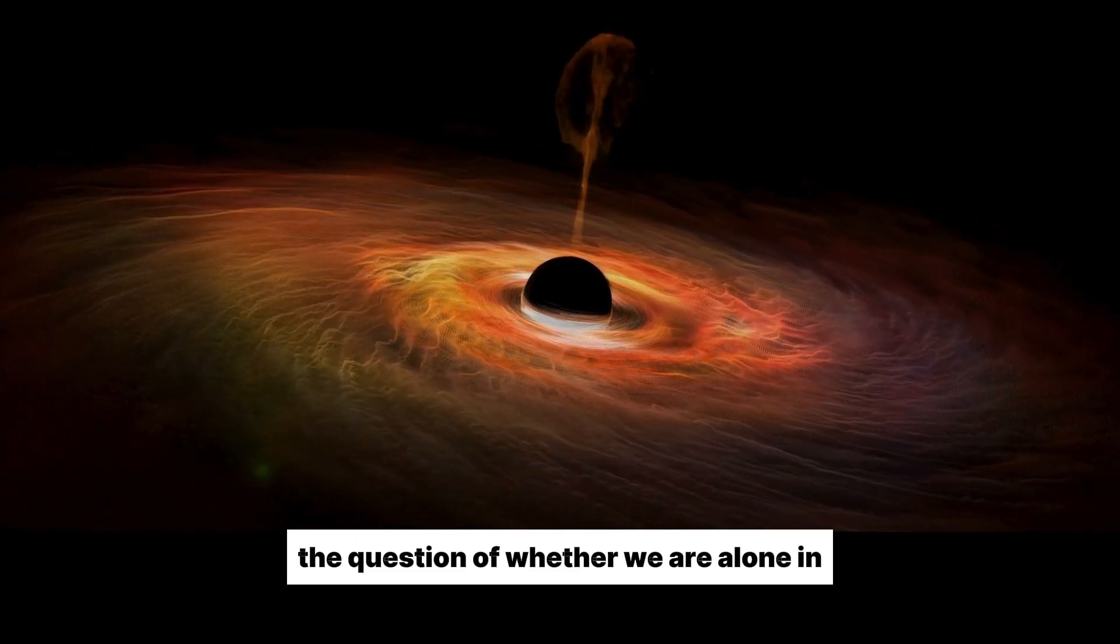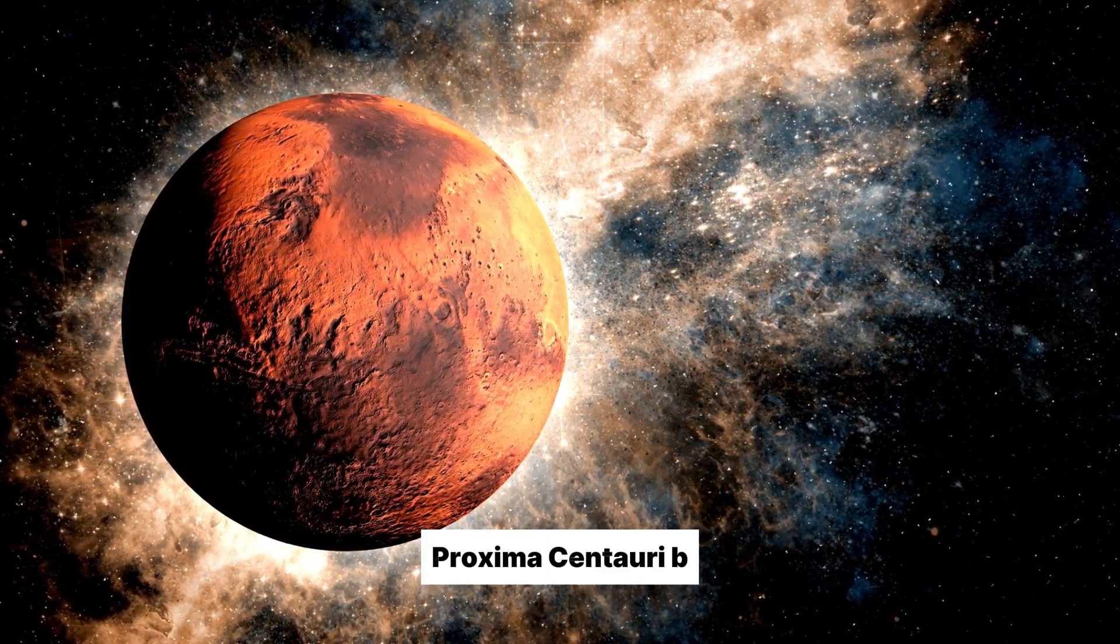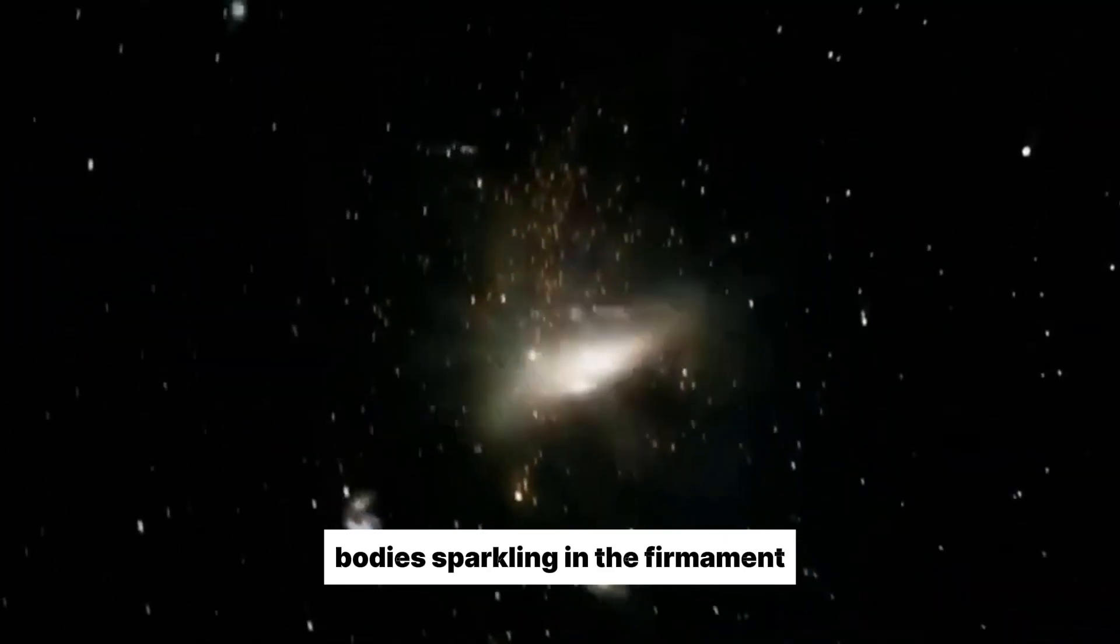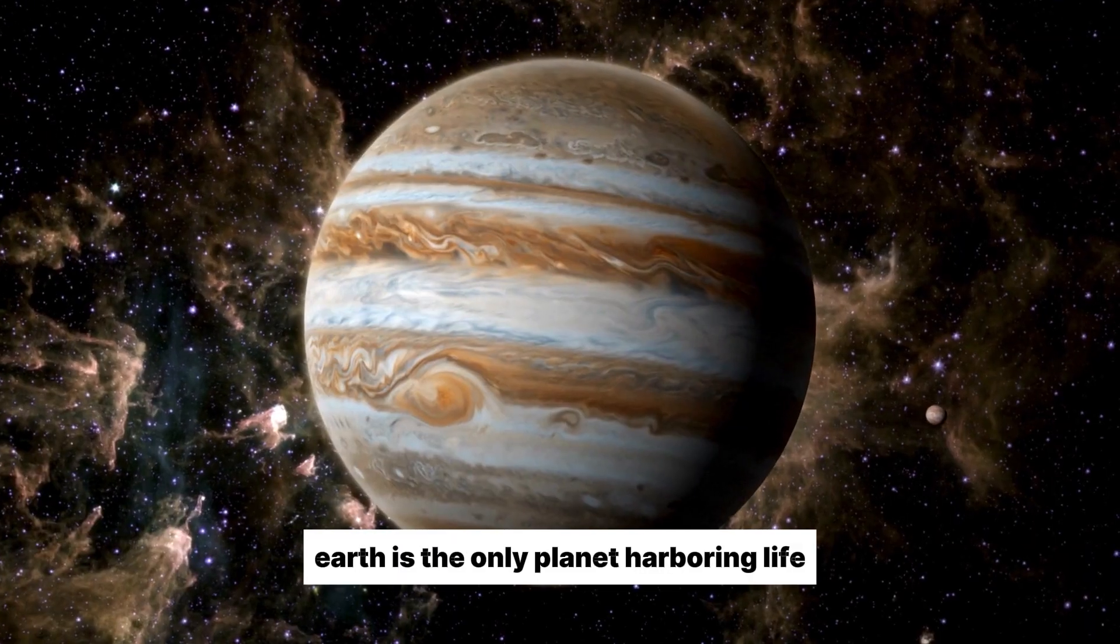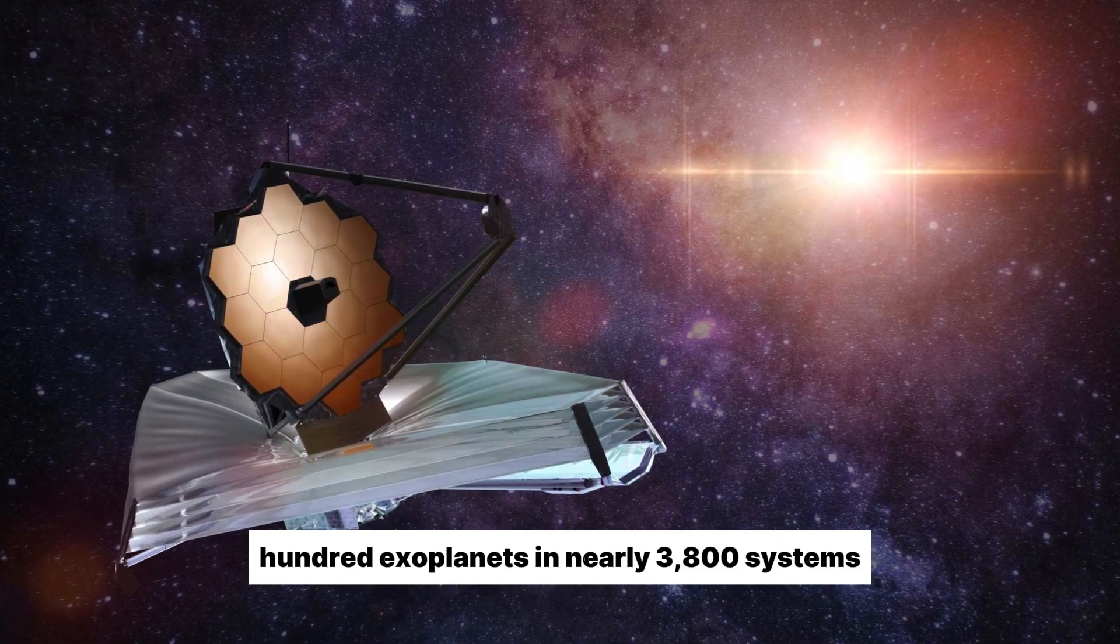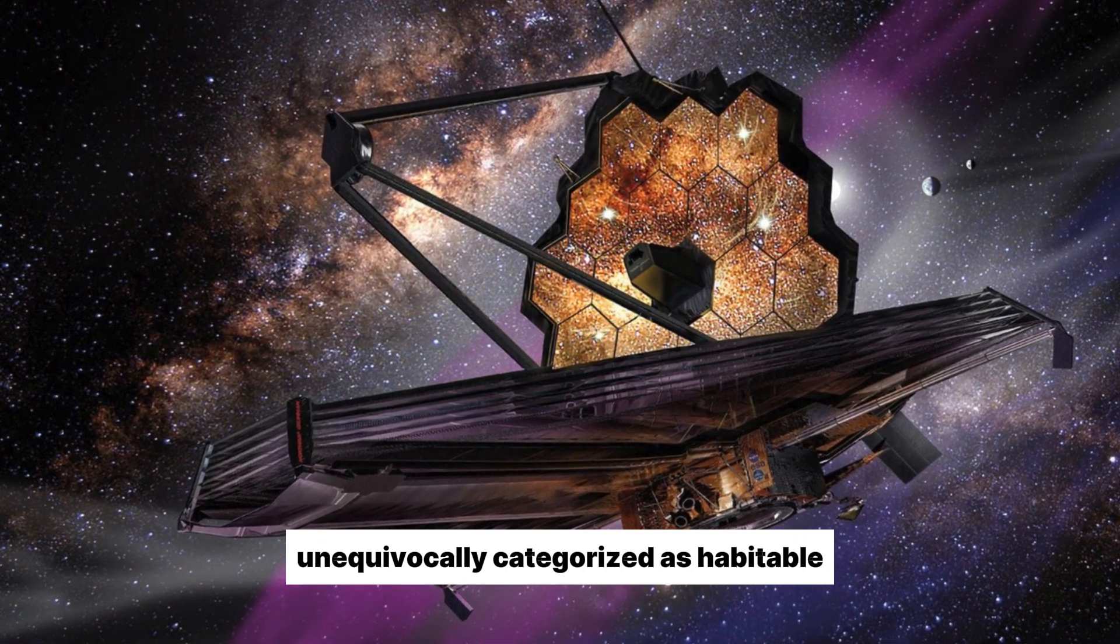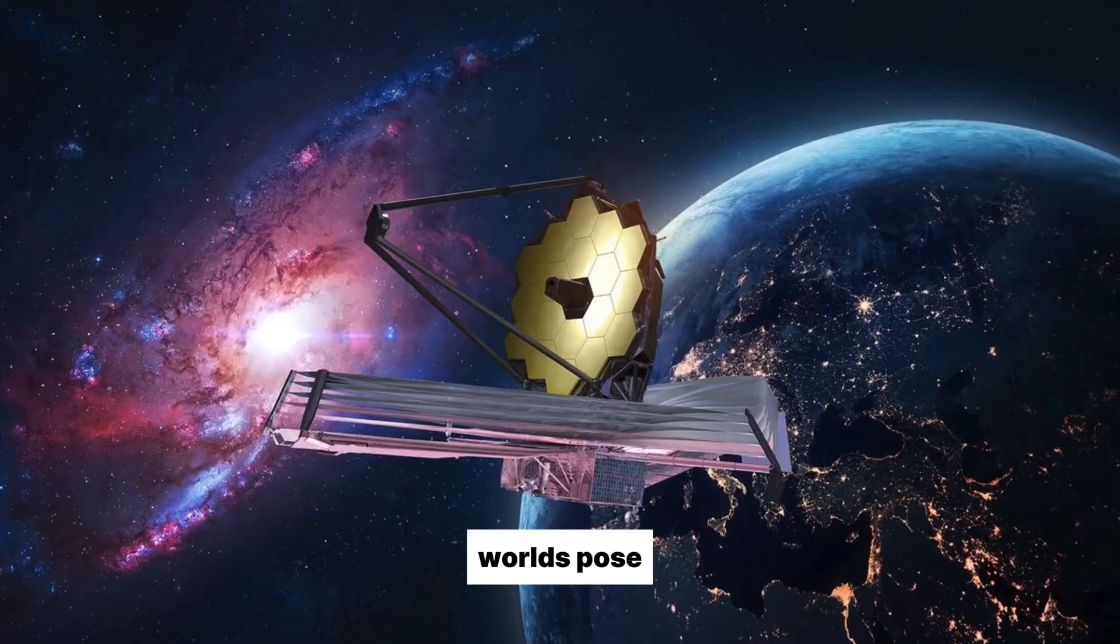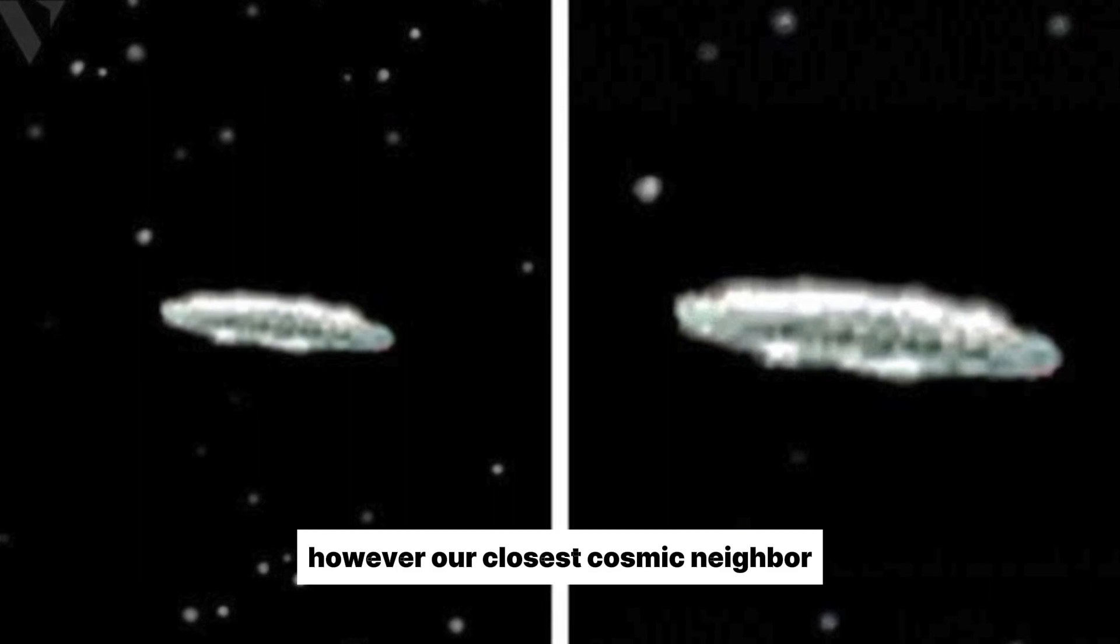The question of whether we are alone in the universe has fascinated humanity for ages. When we look up at the night sky, we see countless celestial bodies sparkling in the firmament. It begs the question, is it possible that Earth is the only planet harboring life? Despite the discovery of over 5,100 exoplanets in nearly 3,800 systems, we have yet to find another planet unequivocally categorized as habitable. The vast distances between us and these extrasolar worlds pose a significant challenge for precise analysis. However, our closest cosmic neighbor, Proxima Centauri B, presents a different scenario.